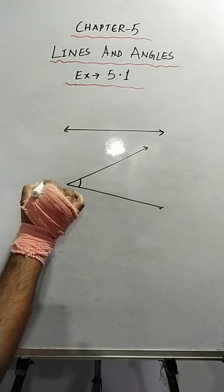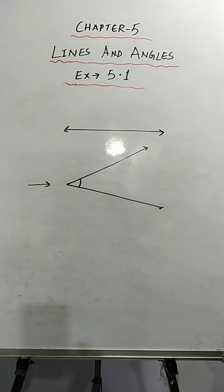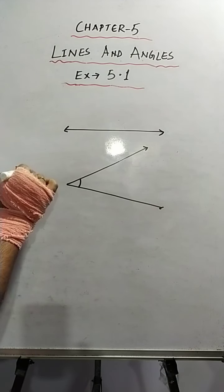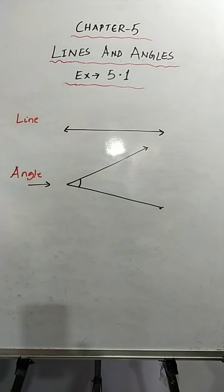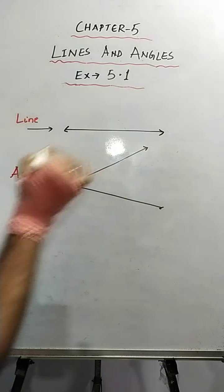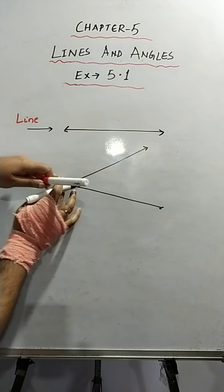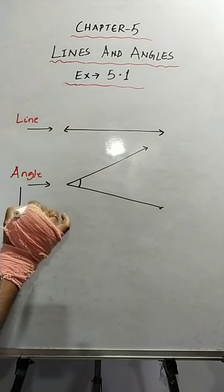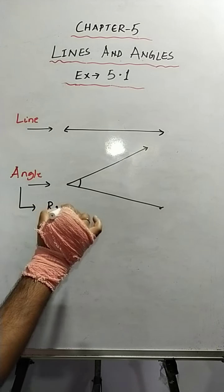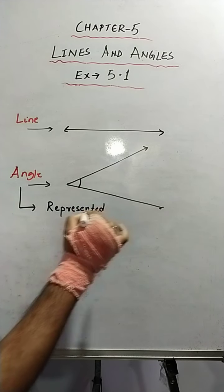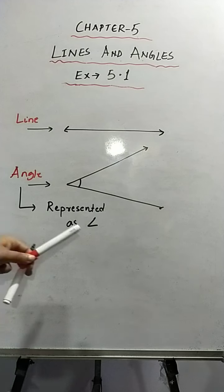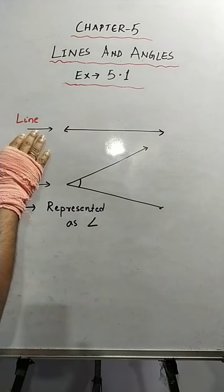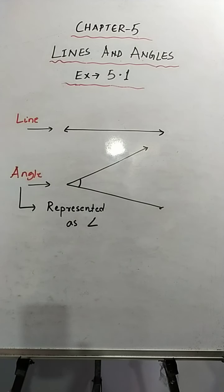So this is an angle and this is a line — when two lines intersect somewhere, they form an angle. Now an angle is always represented with a specific symbol. This is all about lines and angles.